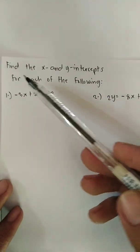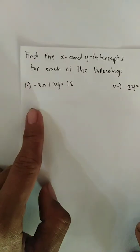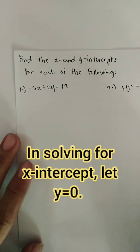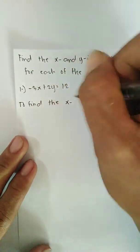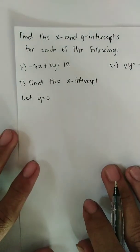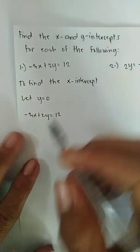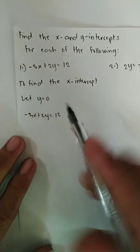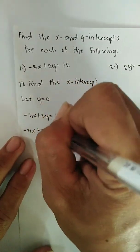Our goal is to find the x and y intercepts for each of the following examples. For number one, always remember that in finding the x-intercept, let y equal zero. So to find the x-intercept of negative 3x plus 2y equals 12, we substitute 0 for y. We say: negative 3x plus 2 times 0 equals 12.